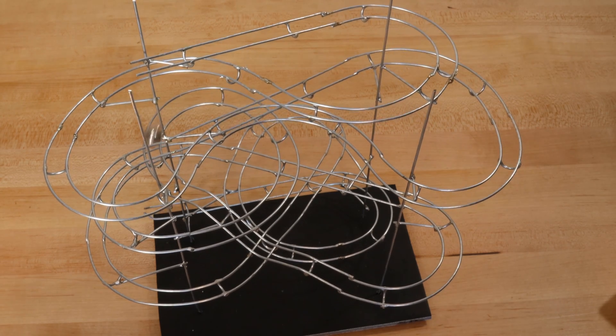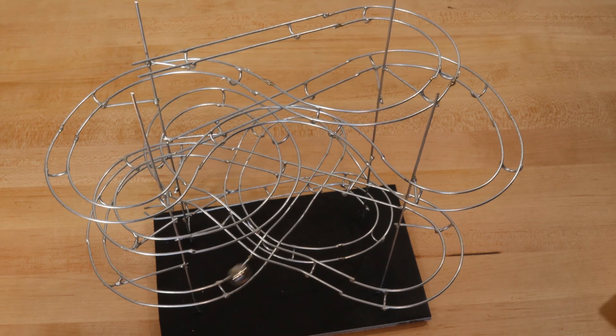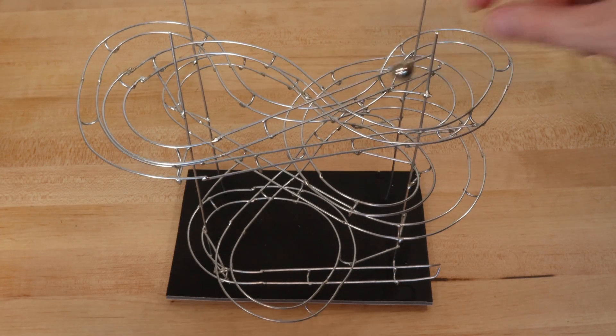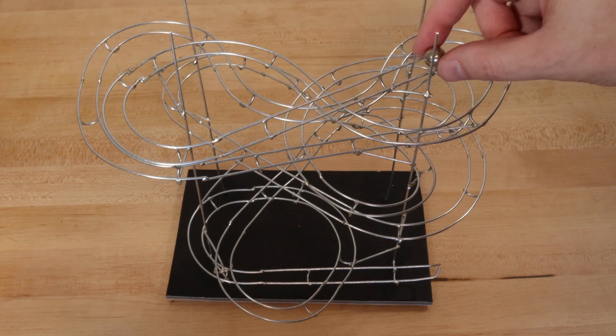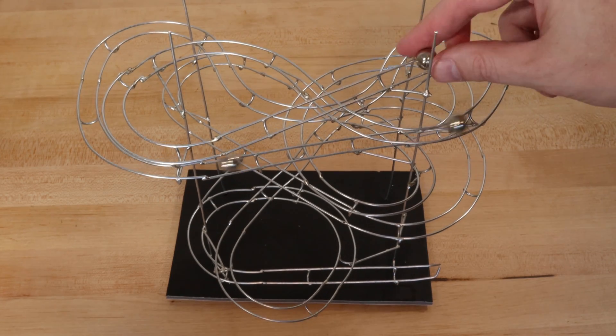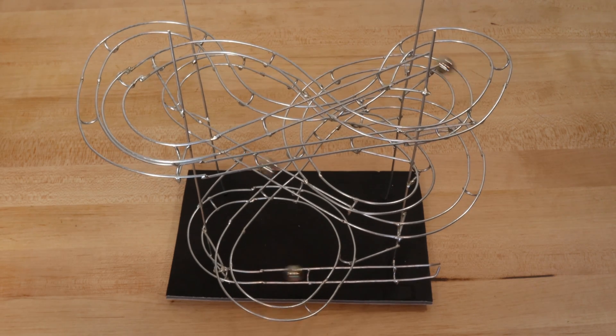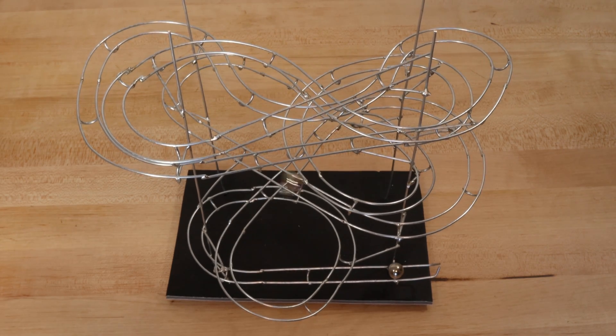Overall this process worked really well. One of the advantages of using all of these pre-built segments is I could actually keep the track very compact. Last time I made a marble track I used long pieces of wire and they were kind of unwieldy. By having all these pre-built track segments the assembly went relatively easily. It was just a lot of soldering.